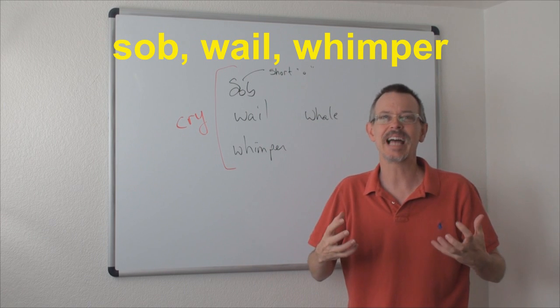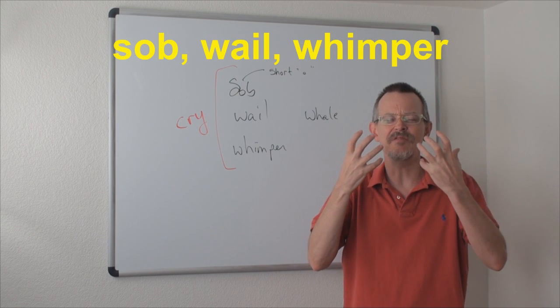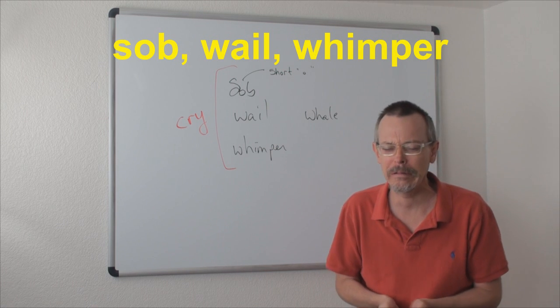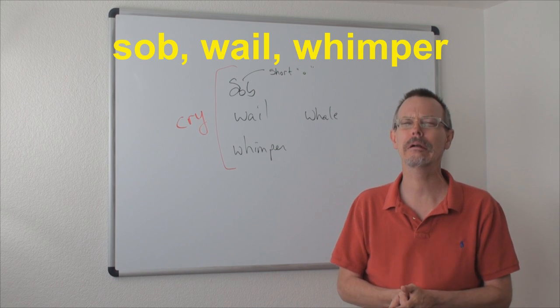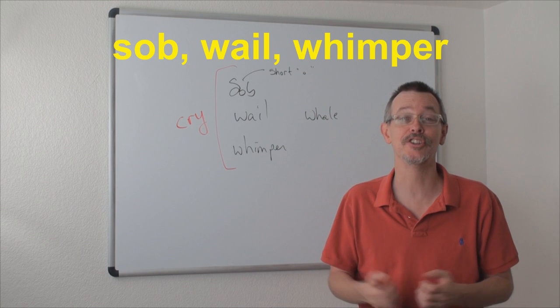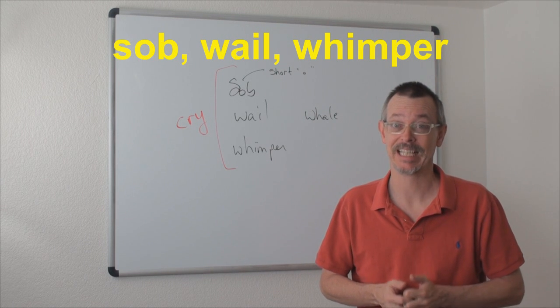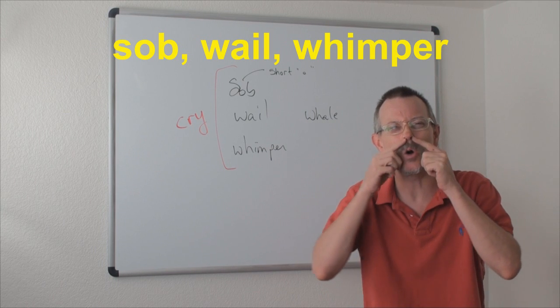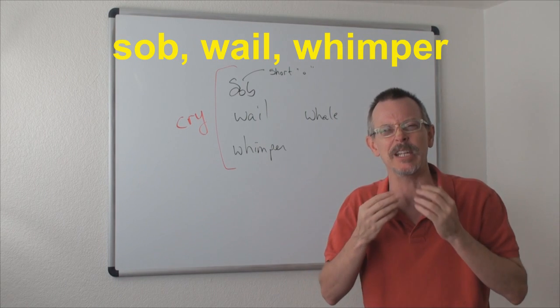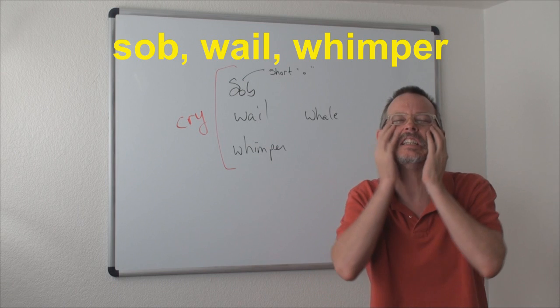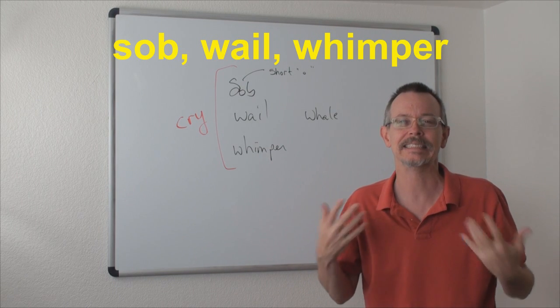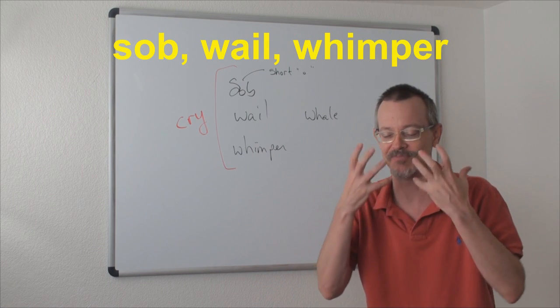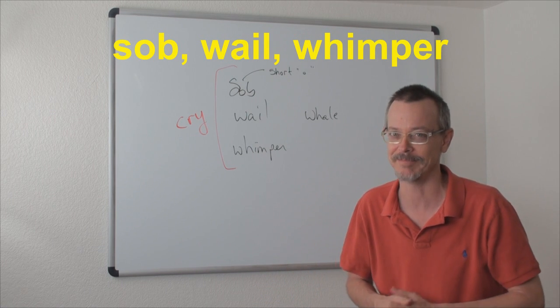Sob, sob means very wet crying. So little children are good at sobbing. Sobbing is something that little kids do. The nose, the snot is coming up, the nose, water, tears. It's just very wet. Sobbing. Quit sobbing. This is the idea. Sobbing is very wet crying. Do you sob?